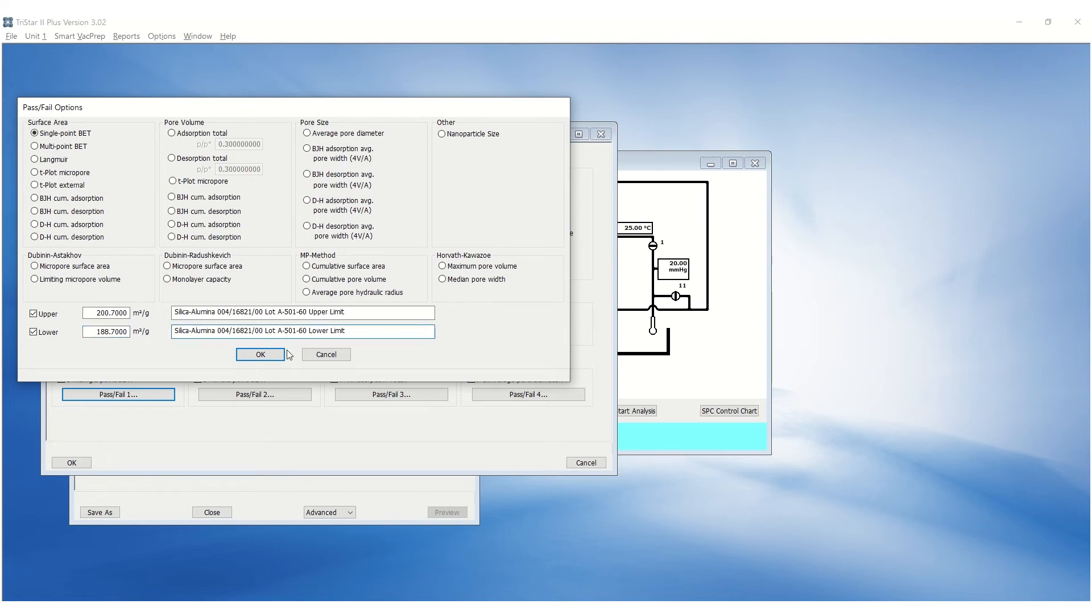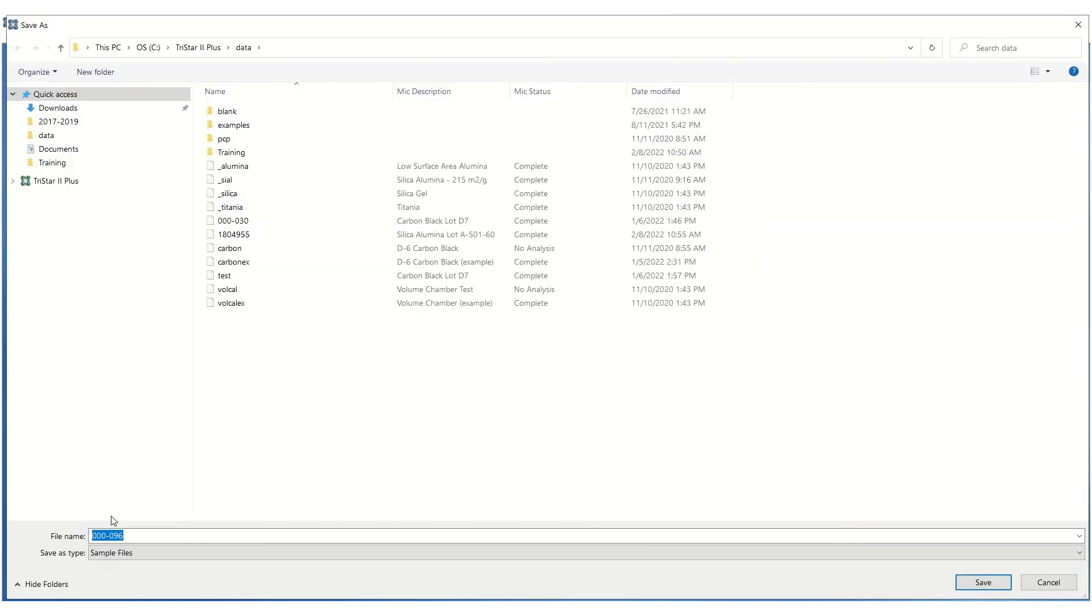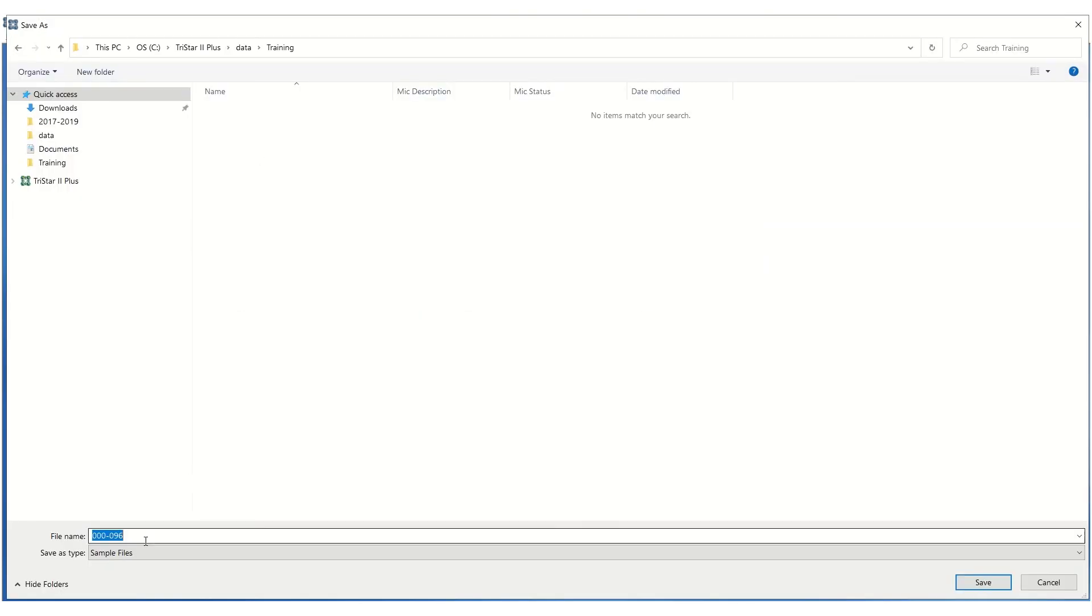Click OK to save. Repeat this for all pass-fail reports. Click OK when finished. Click Save As, enter the desired name and save.